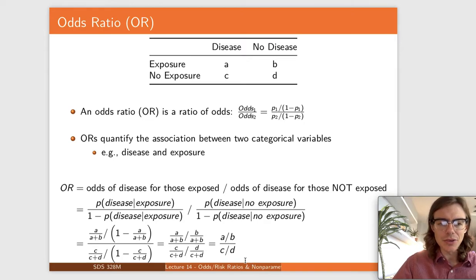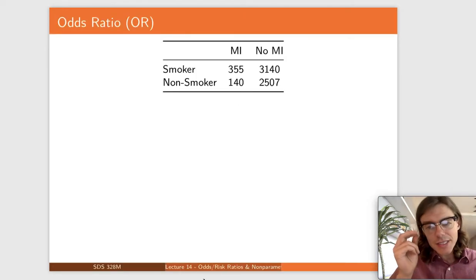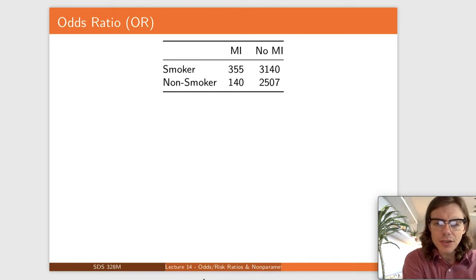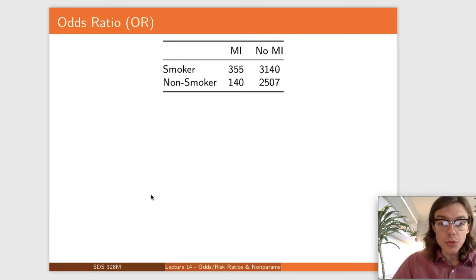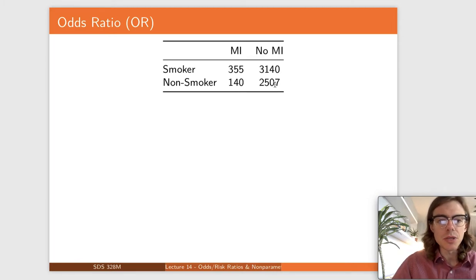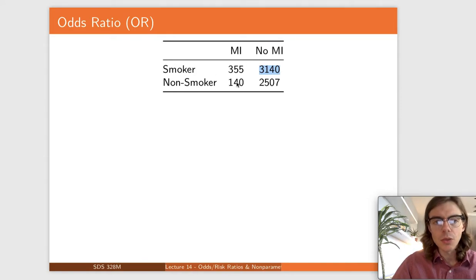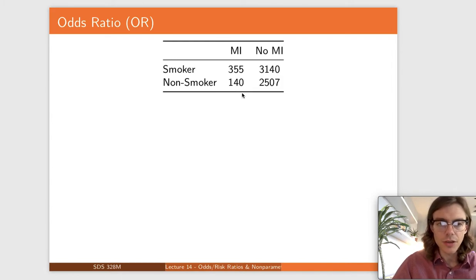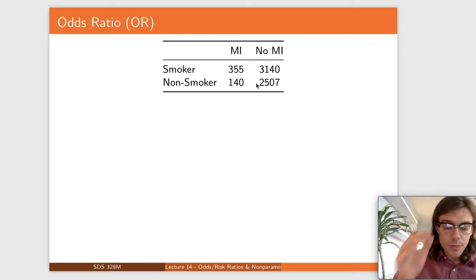Let's do a concrete example — this is just the math of it. Let's say the disease in question is a myocardial infarction, and let's say the exposure is whether you're a smoker or a nonsmoker. These are counts from an actual study. They surveyed a bunch of people: 355 were smokers who had myocardial infarctions, 3140 were smokers who did not, 140 were nonsmokers who had myocardial infarctions, and 2507 were nonsmokers who didn't. So it's a pretty big sample — a pretty good study.